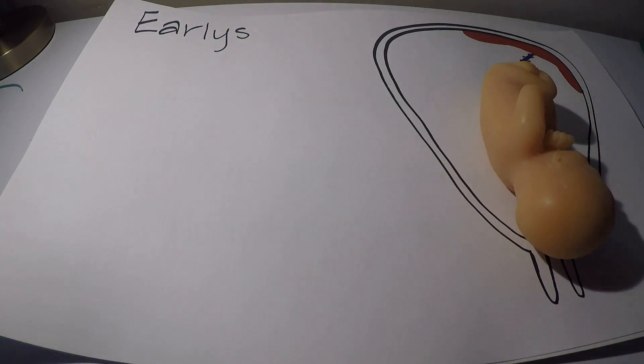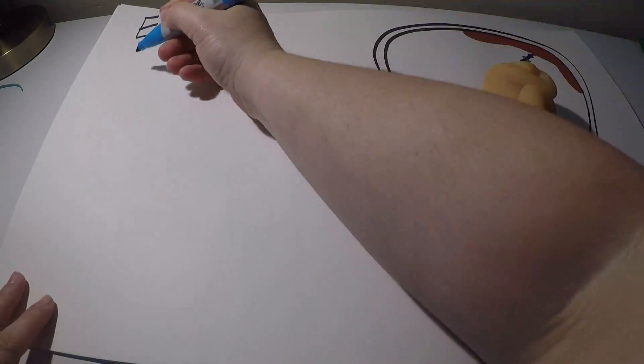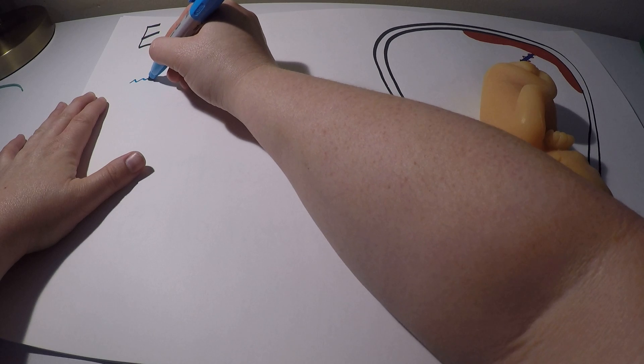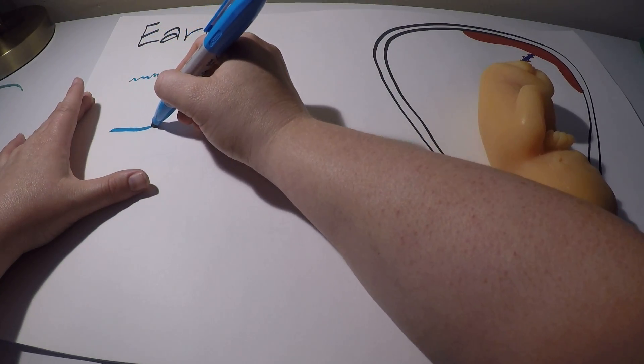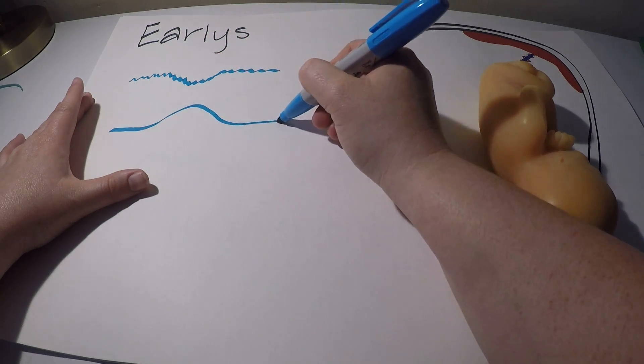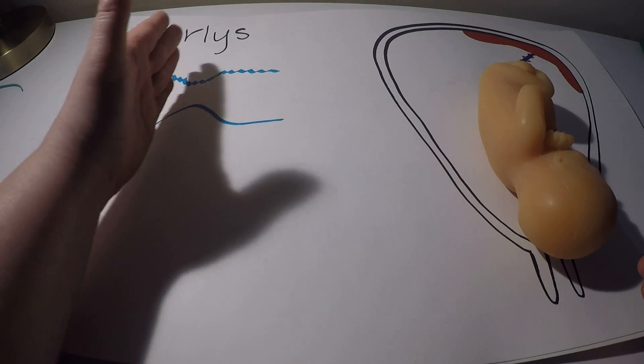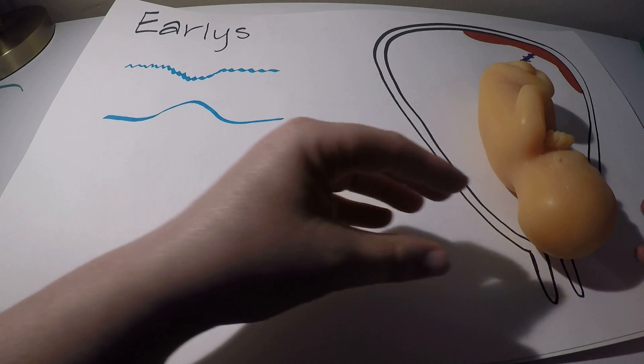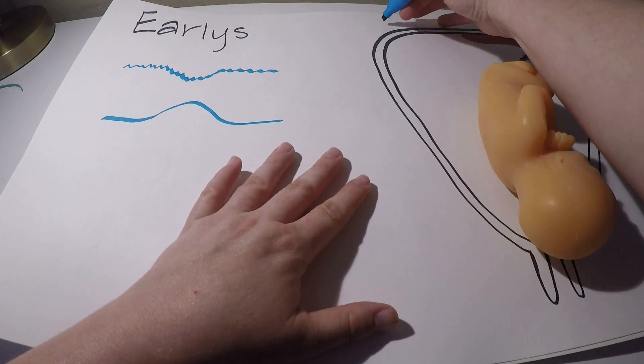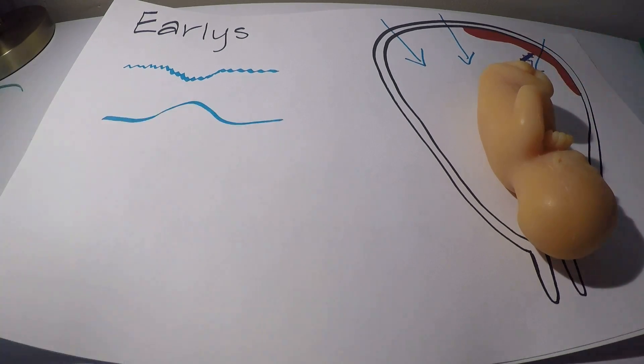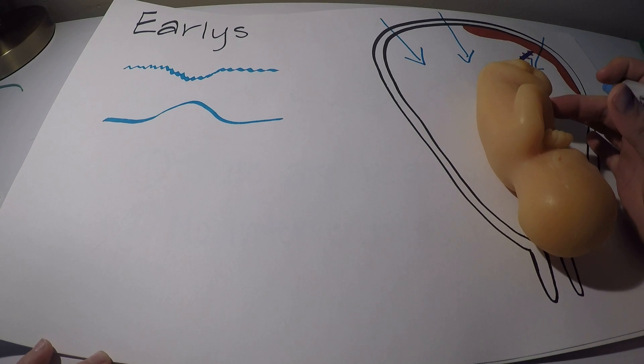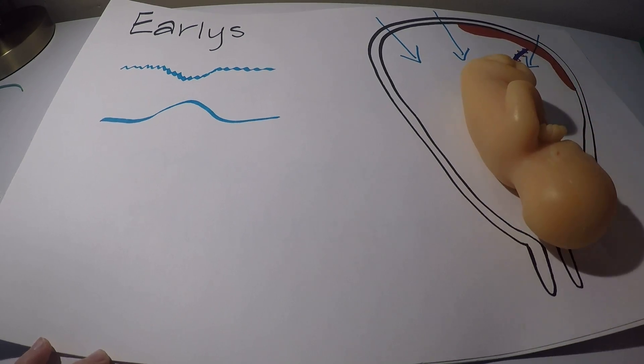So as the contraction is causing the heart, the deceleration, the contraction is going to mimic the deceleration. And what I mean by that is you're going to have a deceleration that looks like this and a contraction that matches it. So it's going to start with the contraction and end with the contraction. Again, it's that head compression as the contraction pushes the fetus down onto the cervix and into the birth canal. That is going to cause the head to compress and that's going to cause a slowing of the fetal heart rate.